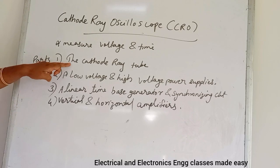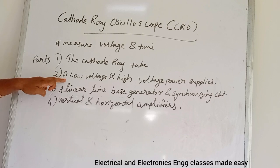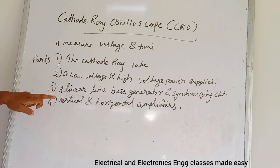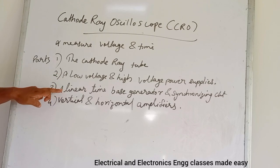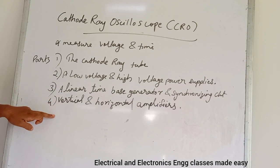The main parts are: the cathode ray tube, a low voltage and high voltage power supply, a linear time-based generator, a synchronizing circuit, and vertical and horizontal amplifiers.